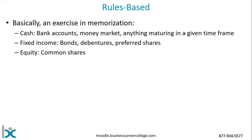The traditional model has been a rules-based asset allocation model, and this really comes out of how the Canadian Securities course used to present this material, although you won't find this in current iterations. The traditional model was basically that you could memorize a list: everything that looks like cash — bank accounts, money market, GICs maturing in a year or less — would fit into the cash asset class. Fixed income would be bonds, debentures, preferred shares. And equity would comprise common shares. This works reasonably well for ordinary investments, but the investment world has gotten quite a bit more complicated with many variations on traditional investments.